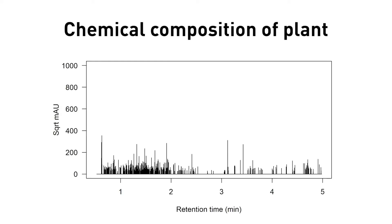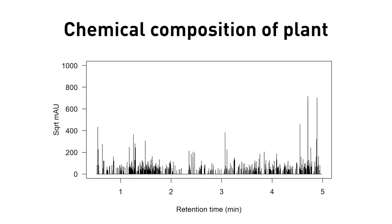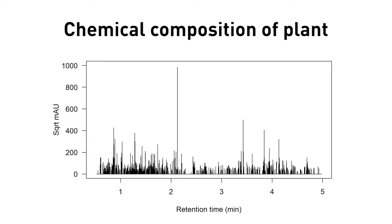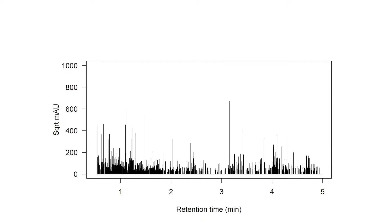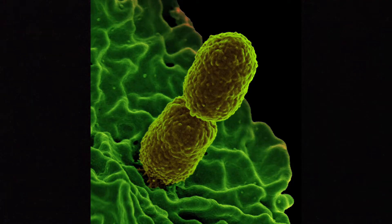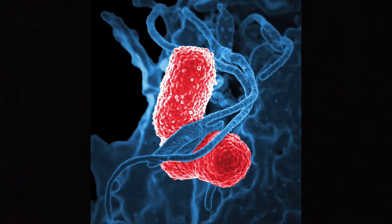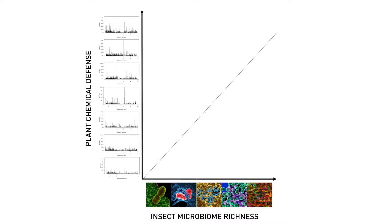Similarly, to address this question at the chemical level, we analyse the chemical plant defences and the richness of the insect microbiome. We then test if a richer microbiome is associated with the ingestion of more toxic plants.